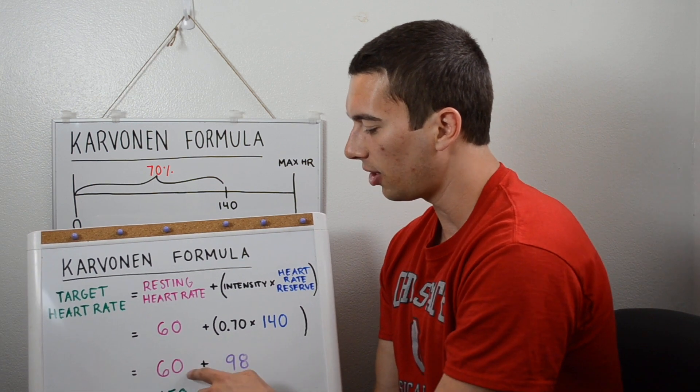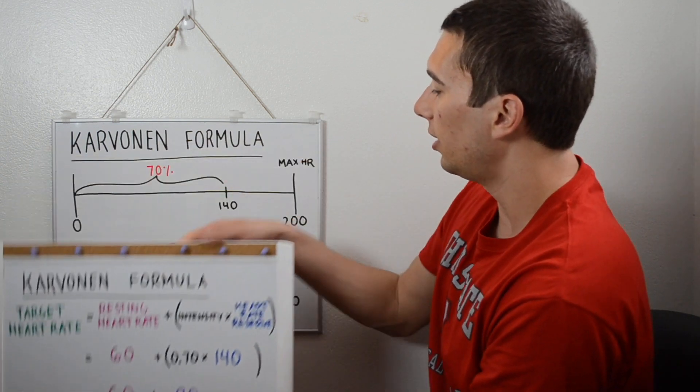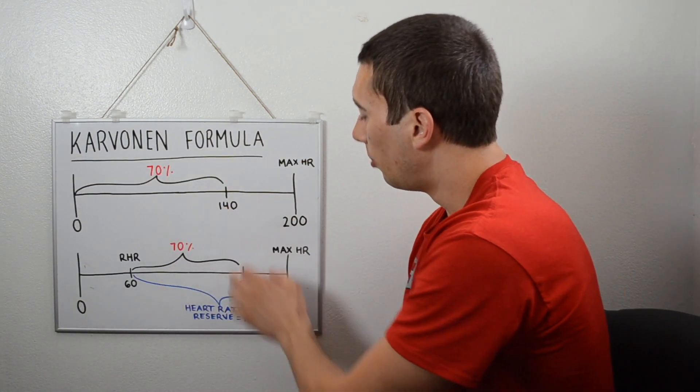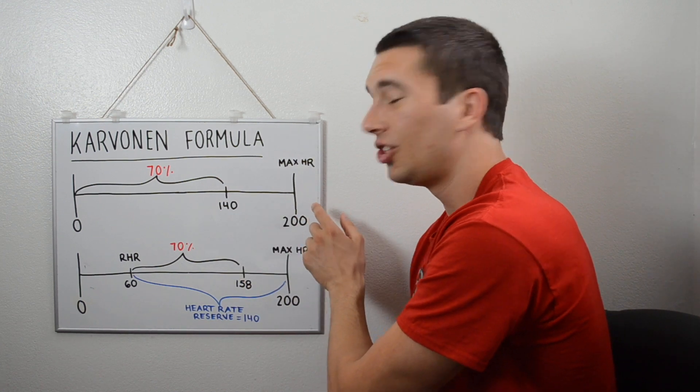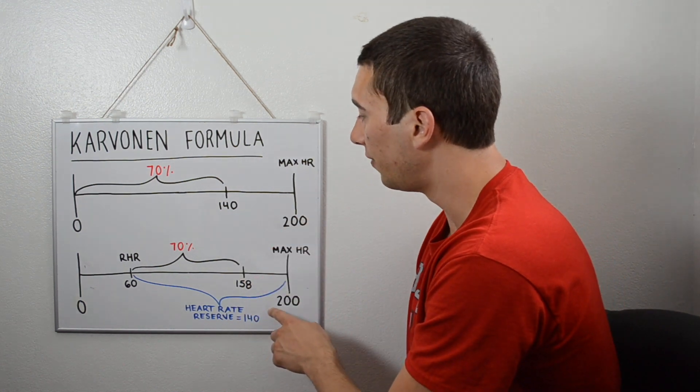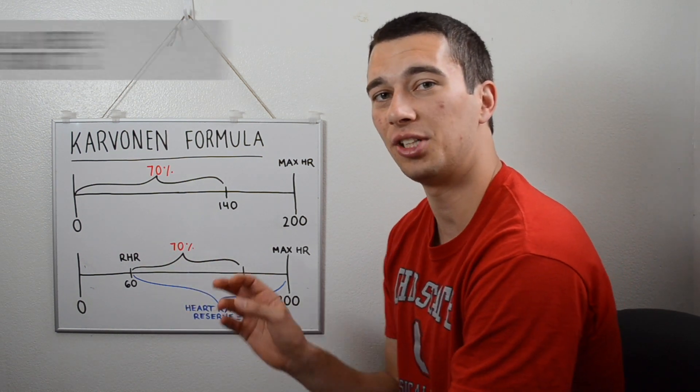And then we add back on the resting, that gets us 158 beats per minute. So what you'll see here is that when we compare it, 140 beats per minute from the strict percentage is much lower than the 158 beats per minute that we get when we use the Karvonen Formula with the same percentage of intensity.